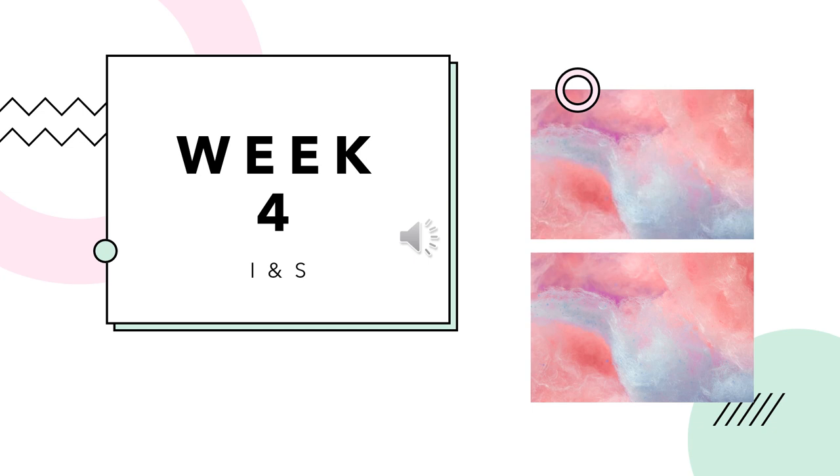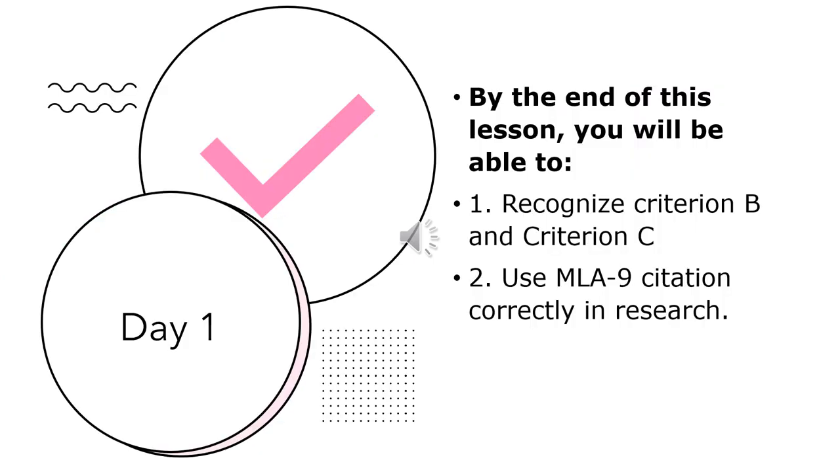My dear students, welcome to week four of individuals and societies course for eighth grade. For this week, we are going to choose one event and research the event in more details, and then create a PowerPoint that describes the event and explains its significance in the development of democracy.